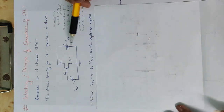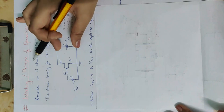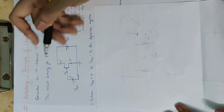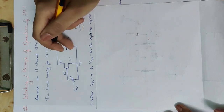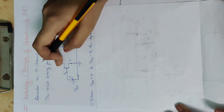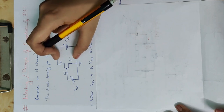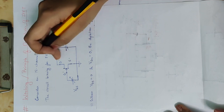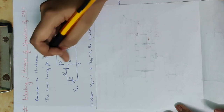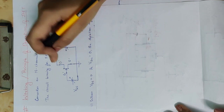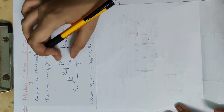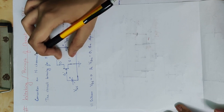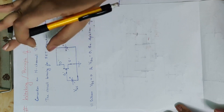If VDS is equal to zero, then the drain-source voltage is zero, meaning S and D are at the same potential. If VDS is equal to zero, then the current flow will not be equal to zero — actually, current will not flow.